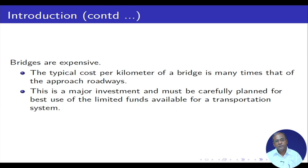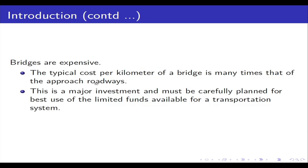Bridges are obviously expensive, and we deal with them separately whenever we consider road construction. The bridge part is separate from the road pavement part — the bridge will be taken care of by the structural engineering group, whereas the pavement part is handled by the transportation engineering group. The typical cost per kilometer of a bridge is many times that of the approach roads. This is a major investment and must be carefully planned for best use of the limited funds available for a transportation system.